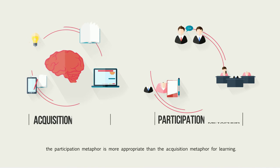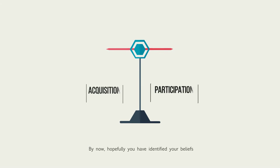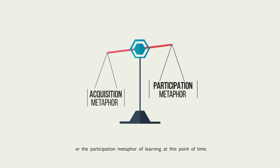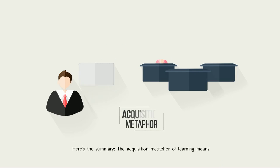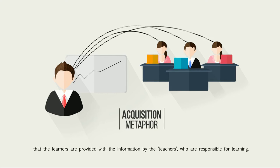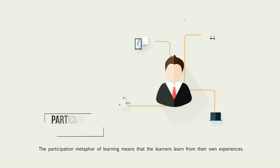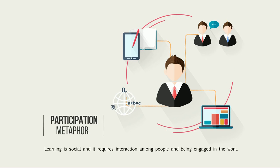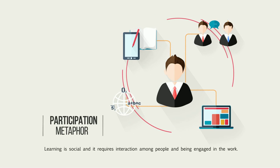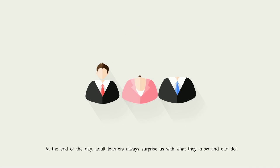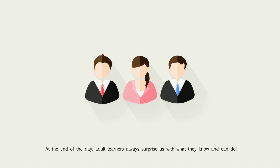By now, hopefully you've identified your beliefs as either more towards the acquisition metaphor or the participation metaphor of learning at this point in time. But it may change. Here's the summary: The acquisition metaphor of learning means that the learners are provided with information by the teachers who are responsible for learning. The participation metaphor of learning means that the learners learn from their own experiences — learning is social and it requires interaction among people and being engaged in the work. This means that the learners are the ones responsible for their own learning. At the end of the day, adult learners always surprise us with what they know and can do.